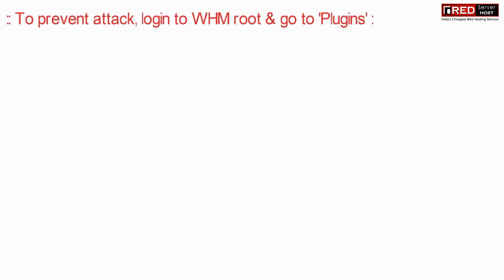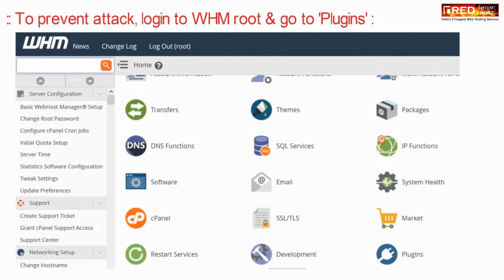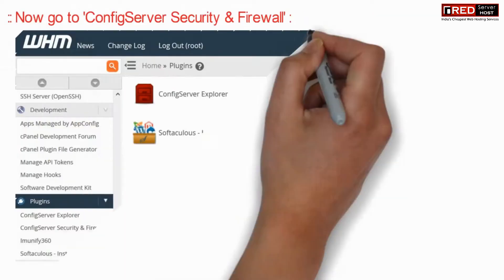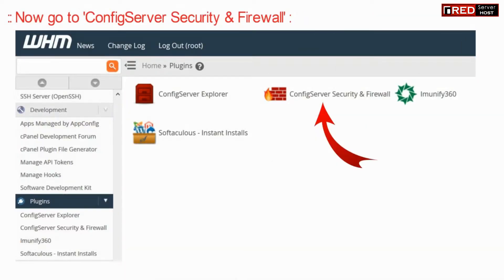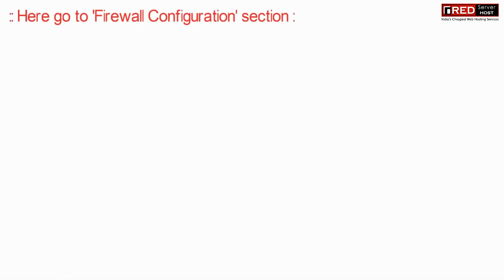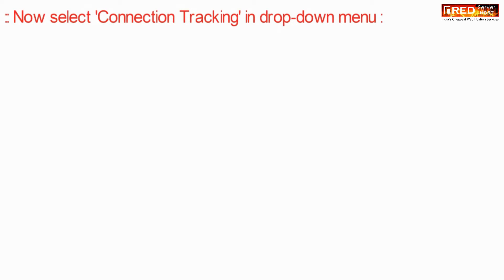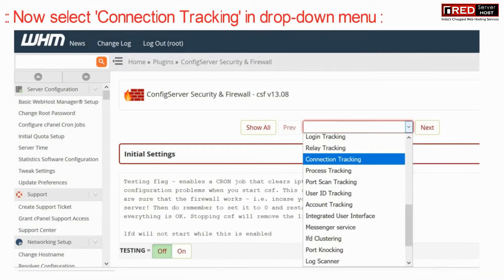In order to prevent this attack, login to WHM root and then go to the plugin section. Now go to Config Server Security and Firewall. Now here go to the firewall configuration section. Now select connection tracking under the drop down menu.